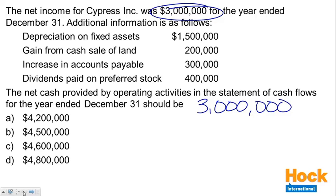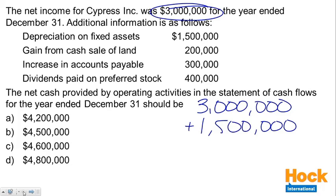First, depreciation on fixed assets. We know that depreciation is a non-cash item — it's not something we pay each year as a cash outflow. So depreciation expense of $1.5 million needs to be added back to net income in order to calculate our cash flows from operating activities.